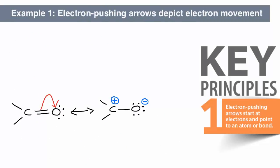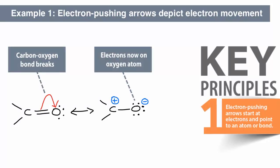For example, this red arrow shows the carbon-oxygen-pi bond breaking. The two electrons from that bond go to the oxygen atom.